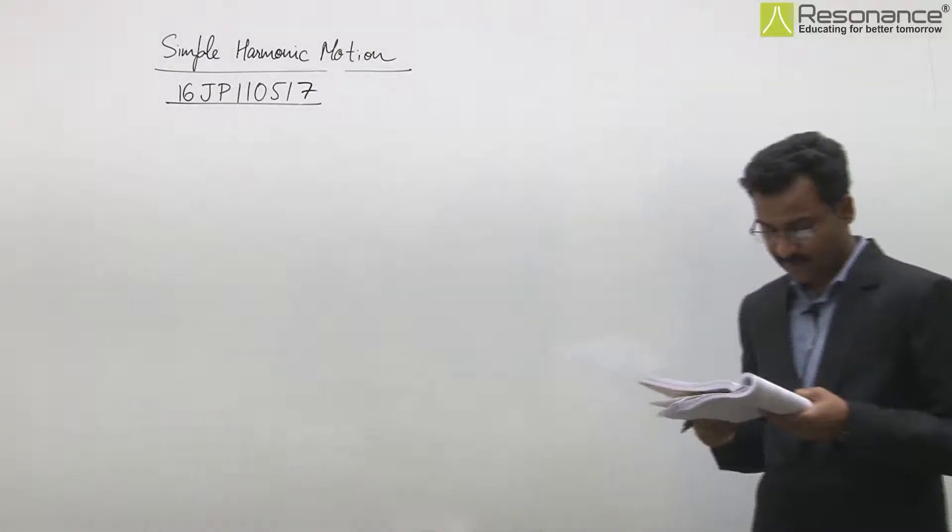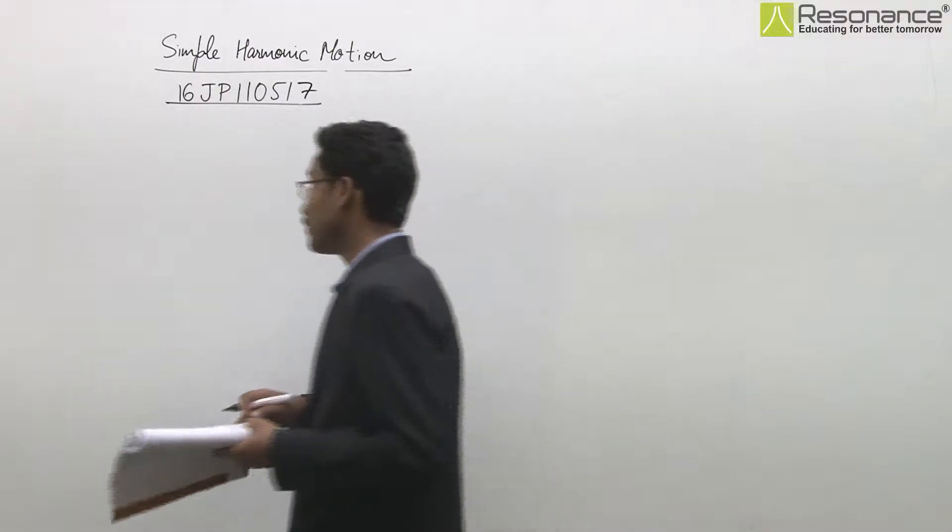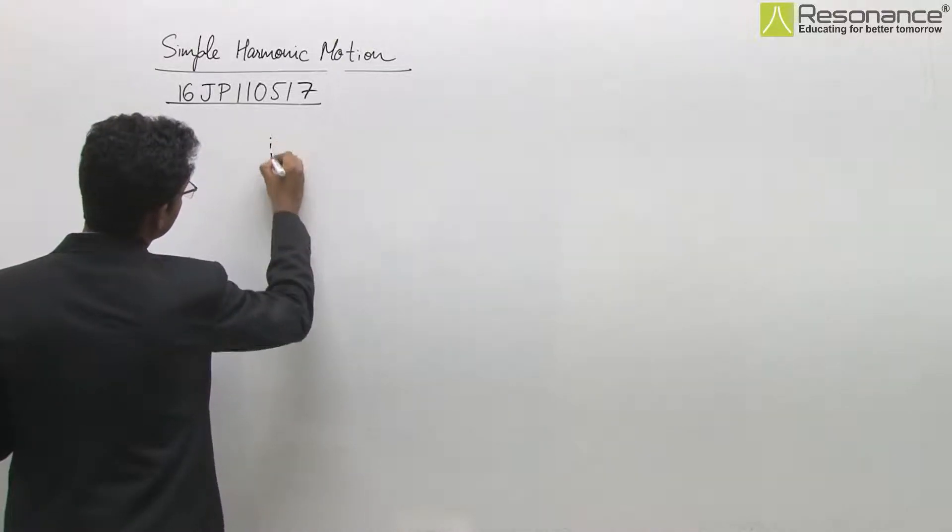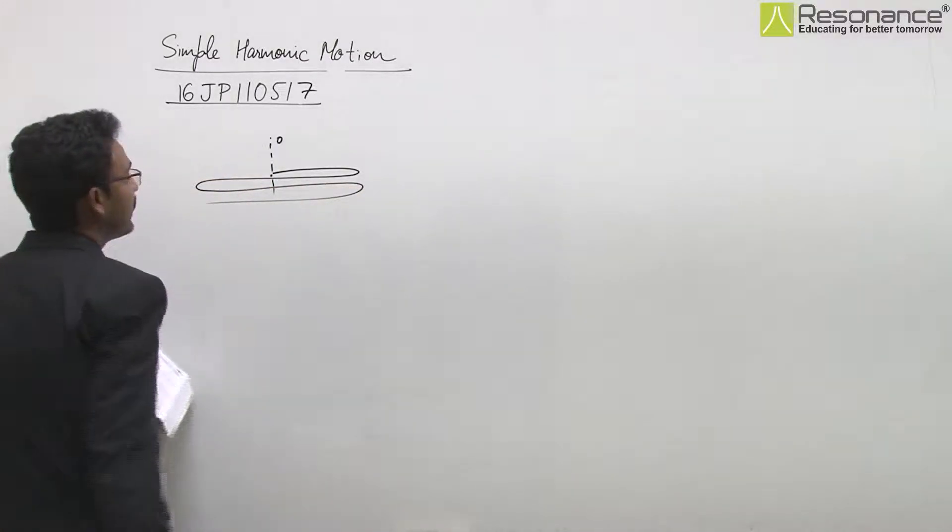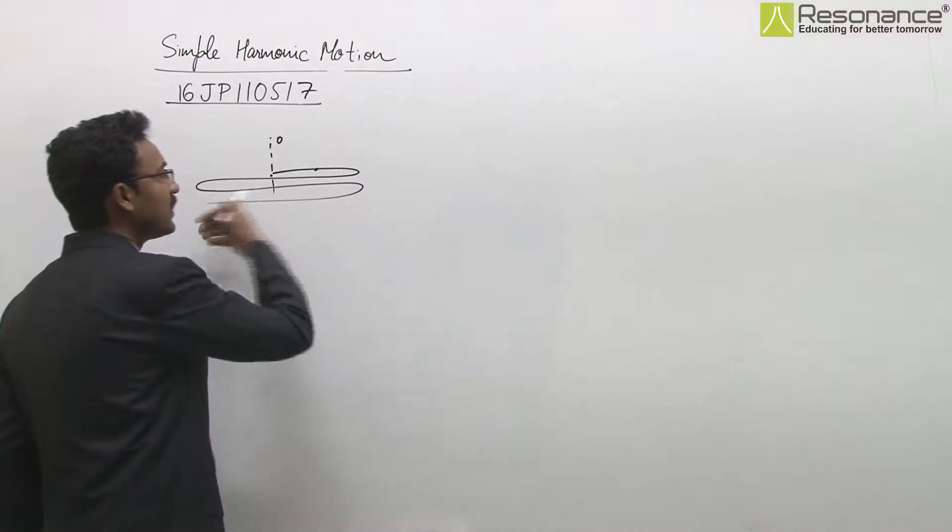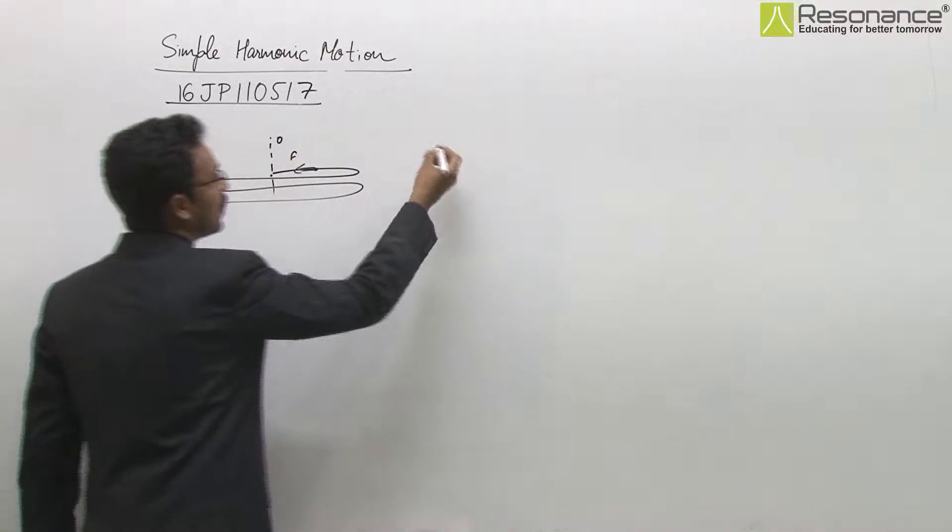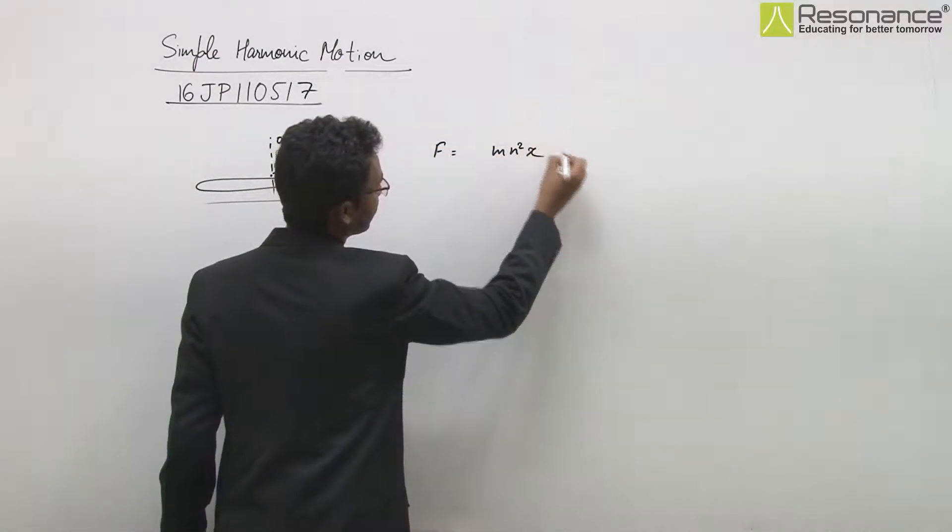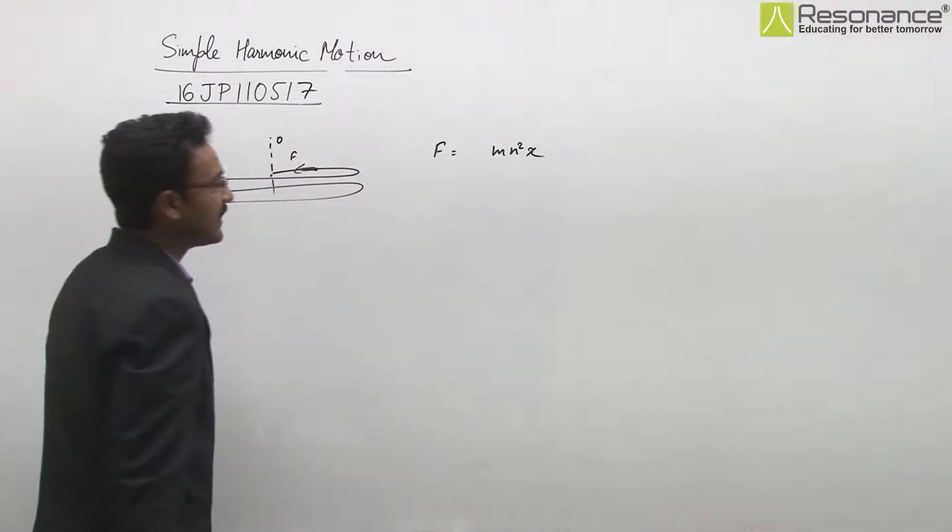In this question, a particle is oscillating in straight line about center O. The force on this particle directed towards O at any instant is F = mn²x. If x is the displacement from O